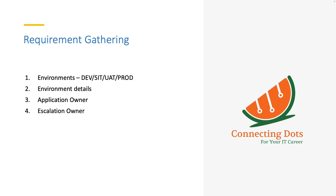Choose two environments or a maximum of three, but I stick with two most of the time. After choosing UAT and production, ask for the environment details based on the connector. For example, if you are working on JDBC, which is used for database connections, you need to ask for the IP address, hostname, database type, port number, database name, and the SQL queries to read data.